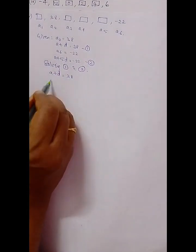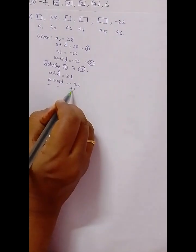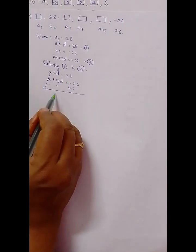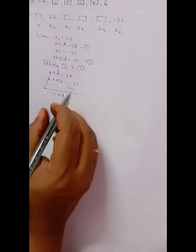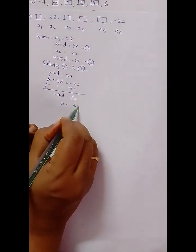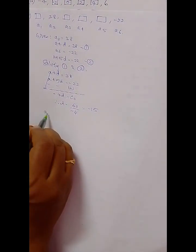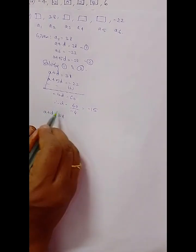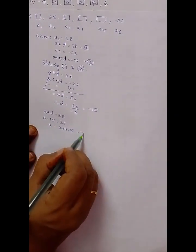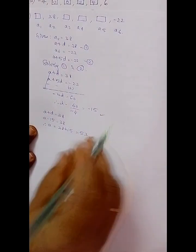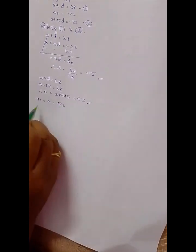Solving: a + d = 38 and a + 5d = -22. Changing signs and subtracting: a cancels, d - 5d = -4d, and 38 - (-22) = 60, so d = 60 / (-4) = -15. Substituting into equation 1: a + (-15) = 38, so a = 38 + 15 = 53. We have a = 53 and d = -15.